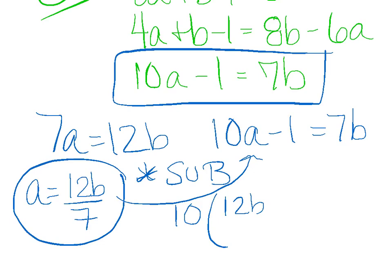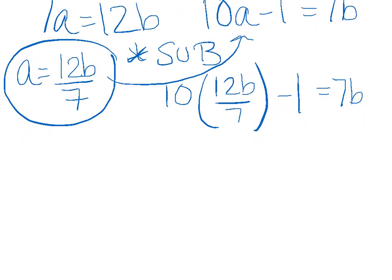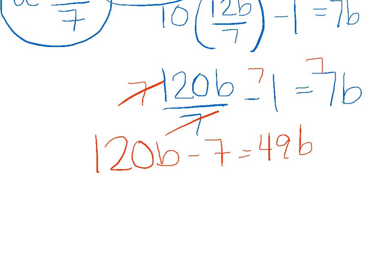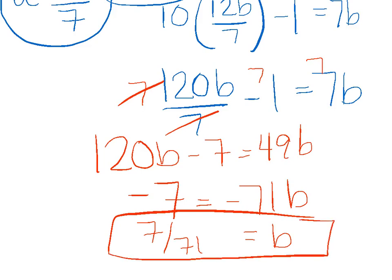So I've got 10 times 12b over 7 minus 1 equals 7b. And I'm just solving this simple equation. That gets me 120b over 7 minus 1 equals 7b. I prefer the method of killing the fraction. If I want the 7 to disappear, I have to multiply by 7. So I'm going to multiply every term by 7. I've got 120b minus 7 equals 49b. I'm going to subtract my 120b. So I've got negative 7 equals negative 71b. And to solve for b, I'll just divide that over. So I've got 7 over 71. Not the friendliest, but I wouldn't say anything harder than you do in Algebra 1 minus the derivative step.